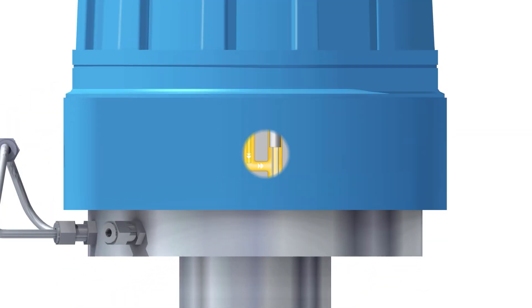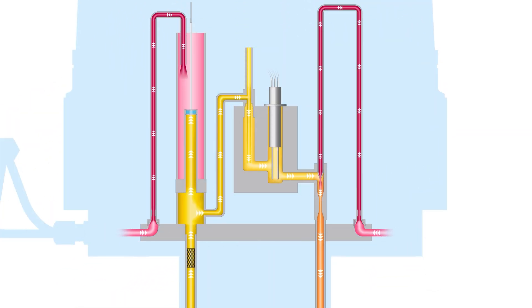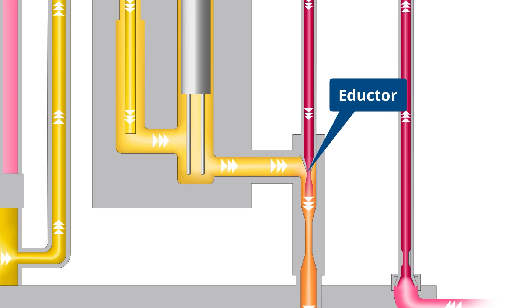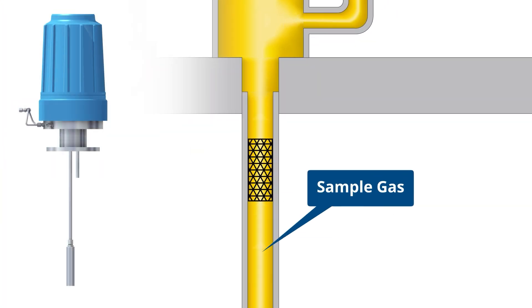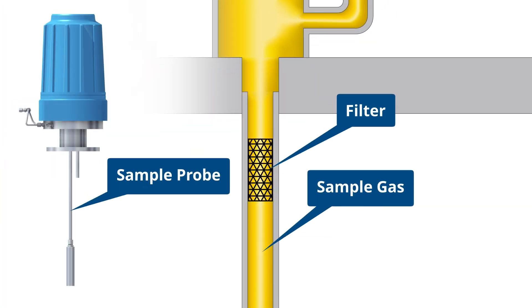To measure the levels of excess oxygen and combustibles, air flows through the eductor, creating a vacuum on the sample gas line. Sample gas is then pulled through the sample probe and filters via the vacuum pressure.